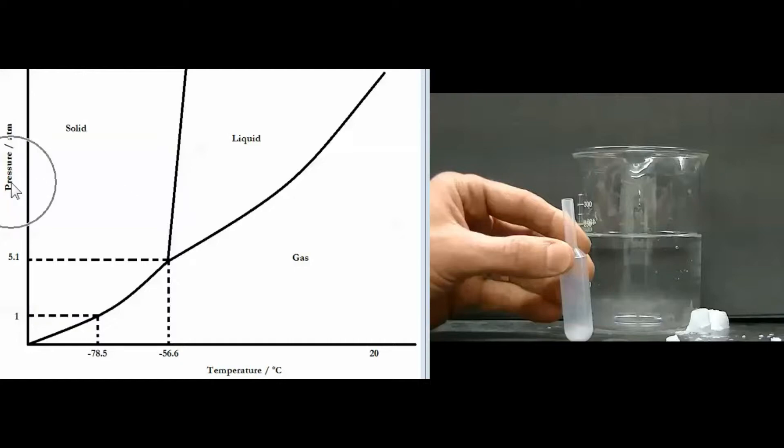We see that pressure is plotted here on the y-axis and temperature on the x-axis. So under normal conditions carbon dioxide is at one atmosphere pressure and room temperature that's about 20 degrees Celsius.